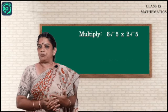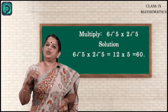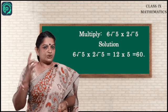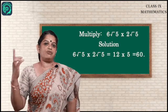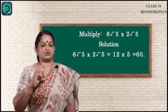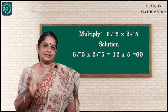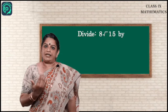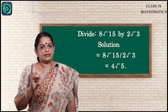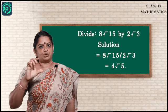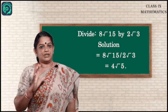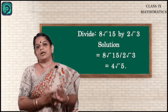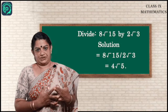For multiplication: 6√5 × 2√5. We know √5 × √5 = 5 and 6 × 2 = 12, so the answer is 60. Similarly, division and subtraction of irrational numbers can be done by grouping like radical terms together.